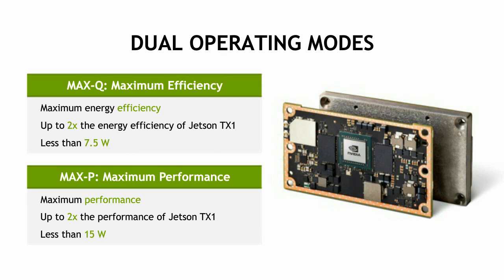With Jetson TX2, NVIDIA introduced the notion of Max-Q and Max-P energy profiles for maximum efficiency and runtime performance, respectively. Using dynamic frequency scaling and other optimizations, Jetson is able to adapt its performance to the user's workload at runtime. Max-Q mode delivers the ultimate power efficiency for under 7.5 watts — it's defined as the maximum inflection point on the TX2's performance-per-watt curve, or the highest amount of performance that yields the best efficiency. Max-P mode is geared for peak performance, consuming less than 15 watts while producing twice the throughput of TX1.